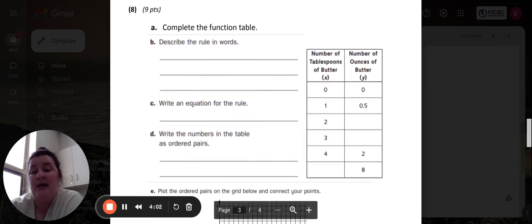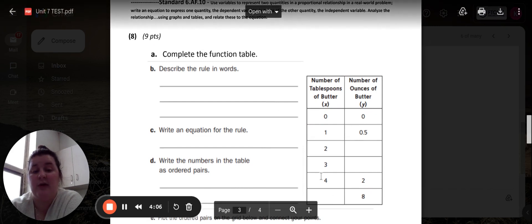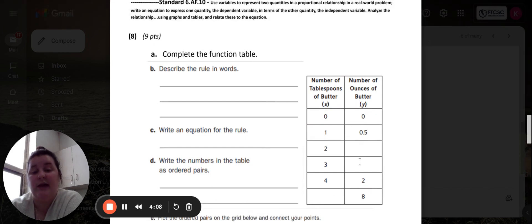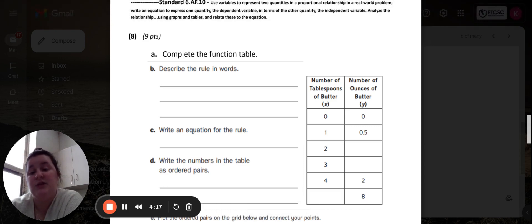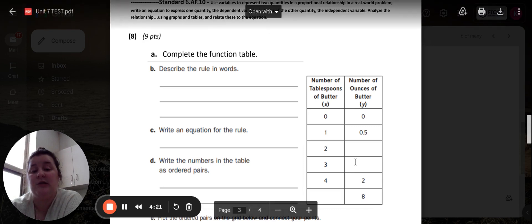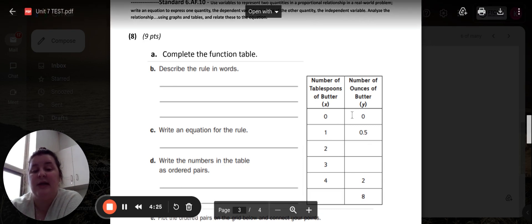Number eight wants you to complete the function table over here to the side. So you're filling in the missing numbers in part A. In part B, it wants you to describe the rule in words. So what are you doing to each one of these numbers to get your Y?